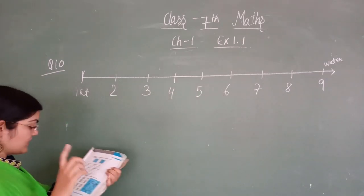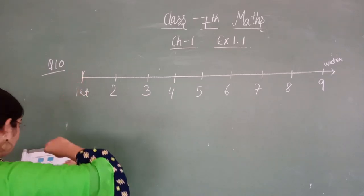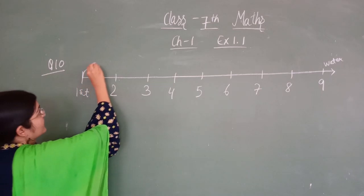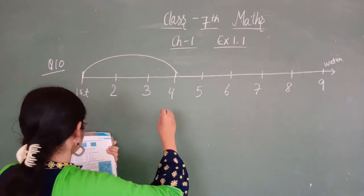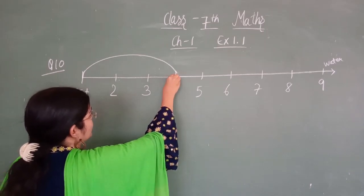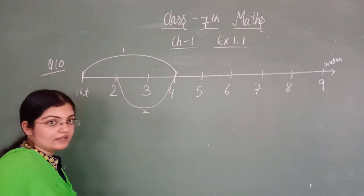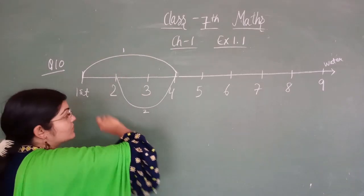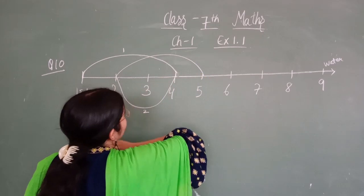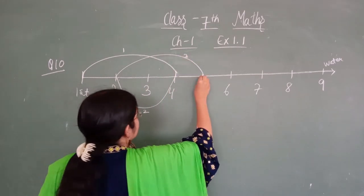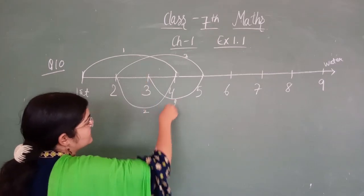So the monkey is at the first step and he jumps three steps down. After this he jumps back two steps up — so he jumps back to here. This is his first jump, and this is his second jump. Now after coming here, again three steps down: three, four, and five — he comes to step five. This is his third jump. After this, two steps up, so he comes here on the third step. This is his fourth jump.